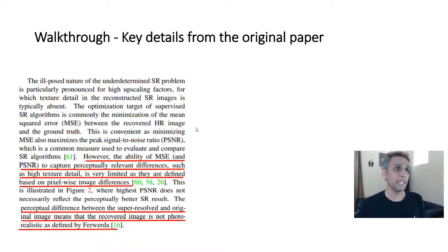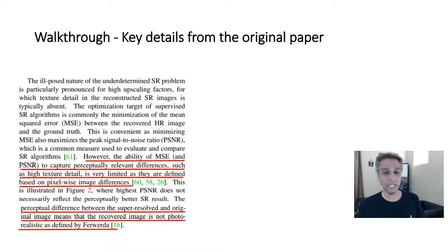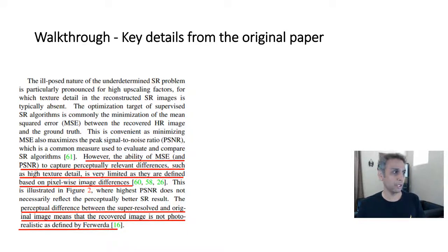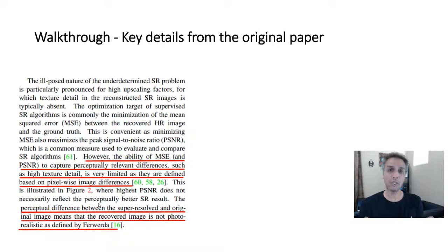The ability of mean squared error or peak signal-to-noise ratio to capture perceptually relevant differences such as high texture detail is limited. Using MSE or PSNR tells you something about noise but doesn't capture actual perceptual differences including texture. If there is a textural difference between two images but both are clean in terms of signal-to-noise ratio, you get very nice PSNR values but they are perceptually different. That's why a perceptual difference between the super-resolved and original image means the recovered image is not photorealistic.